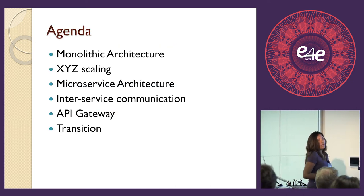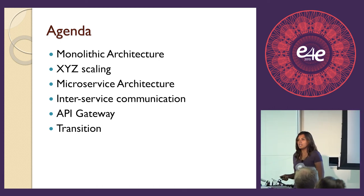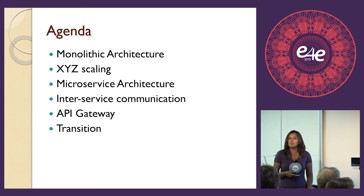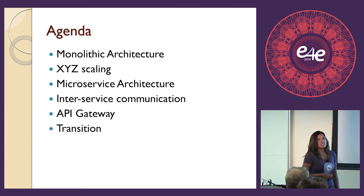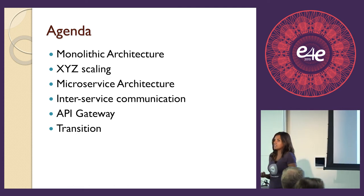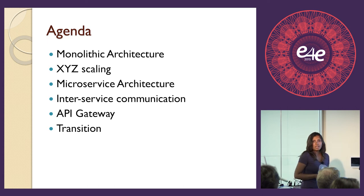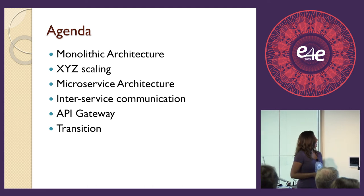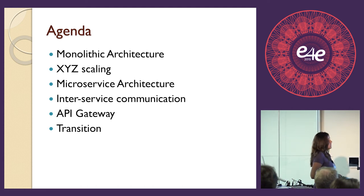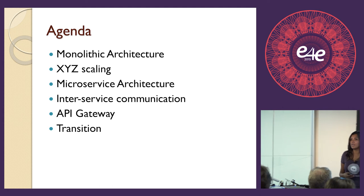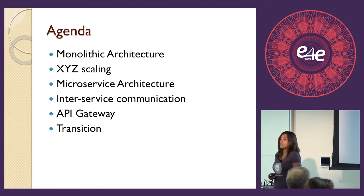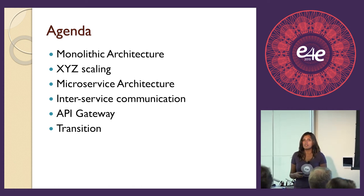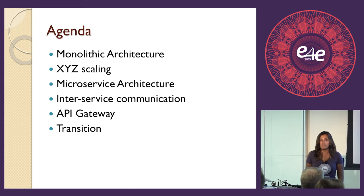On the agenda: we will discuss the more traditional way of designing an application. If you wrote an application ten years back, that is mostly monolithic architecture. We'll compare and contrast that with microservices architecture and discuss the advantages and disadvantages of both. We'll talk about scaling — because scaling is the key if you are working on a SaaS product, especially a successful one. We'll talk about inter-service communication, one design pattern I highly recommend, and the transition from monolithic to microservices.